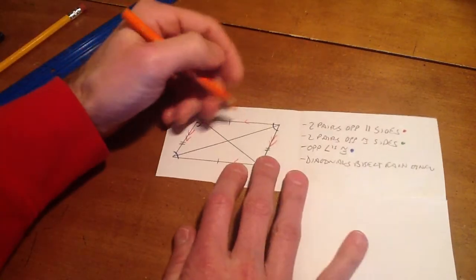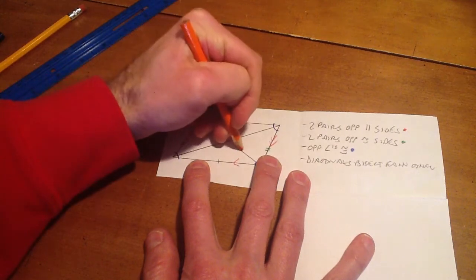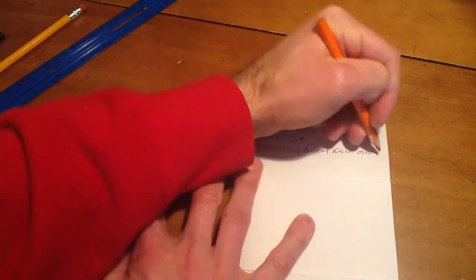And then I'll mark that they get cut in half by marking each of their halves congruent. And again, mark it over here next to my property statement.